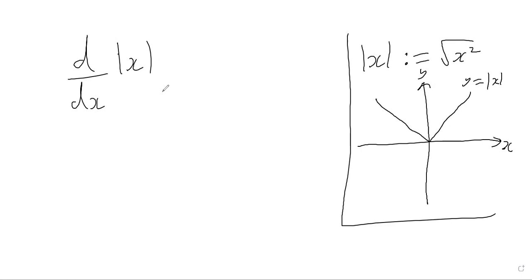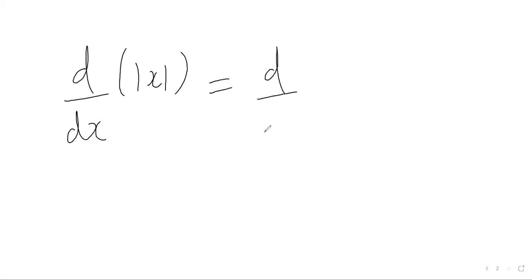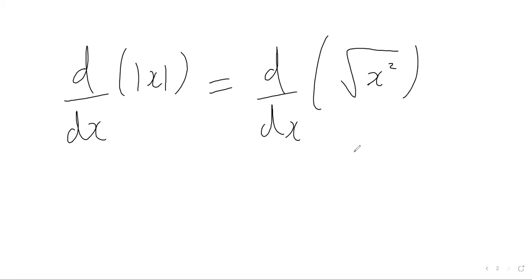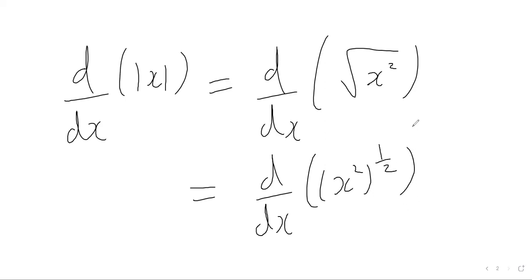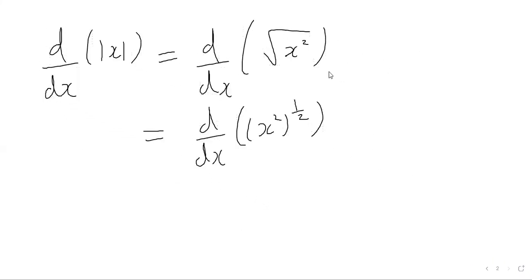So we can differentiate this function. When we differentiate this function, this is just the same as differentiating the square root of x squared. We know that square rooting a number is exactly the same as raising it to the power of a half, so this is the same as x squared to the power of a half. And now we can just use the chain rule — we've done plenty of chain rule examples in previous videos.